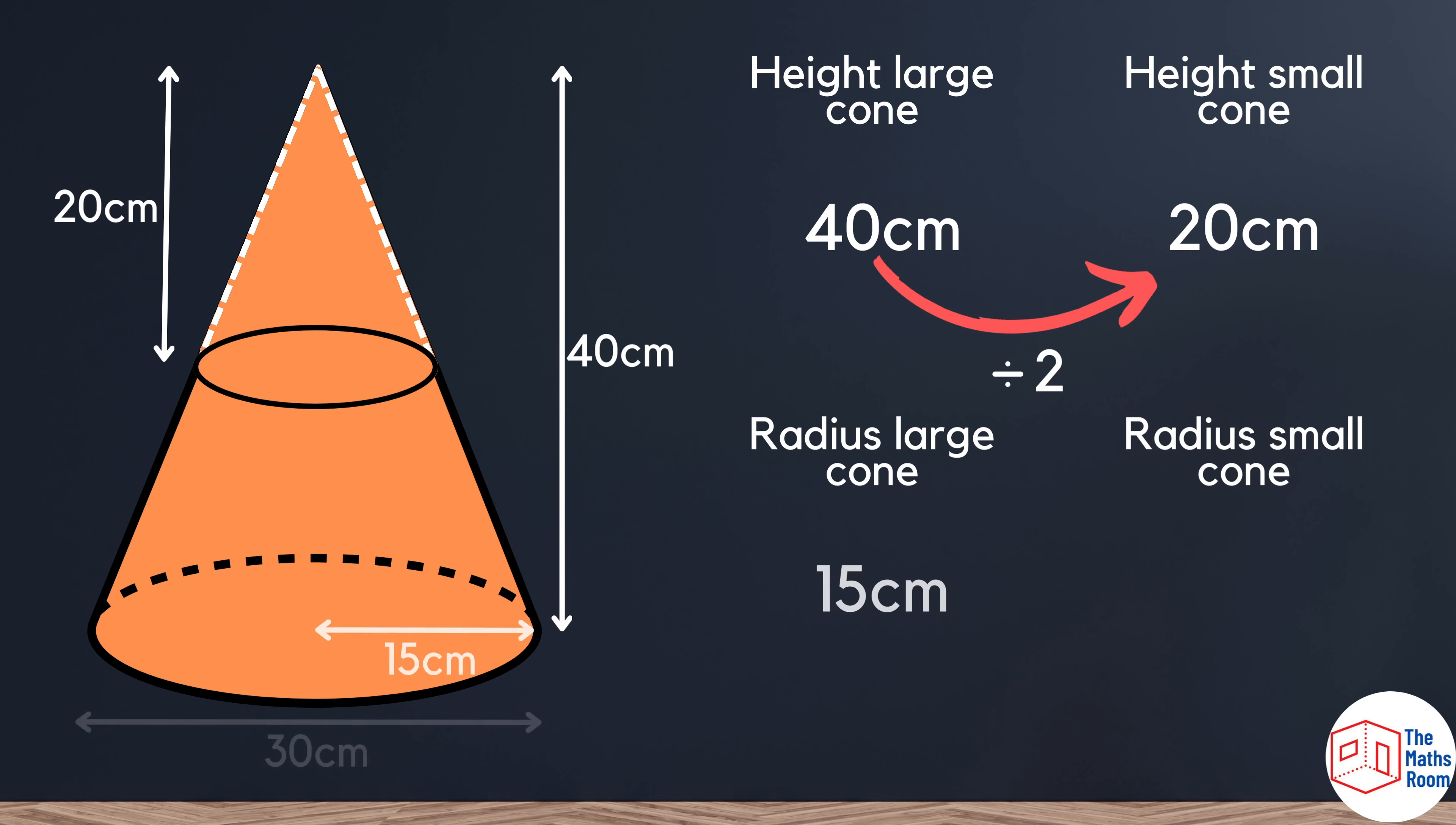If we look at the radius of the large cone, it's 15 centimeters. Performing exactly the same calculation, because the two shapes are similar, we can divide the radius of the large cone by 2 and find the missing radius of the small cone.